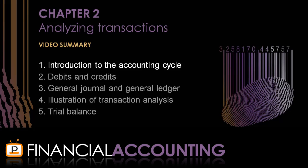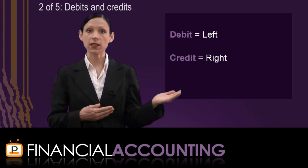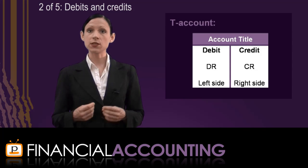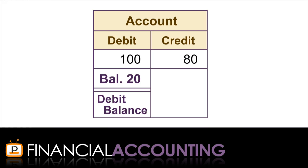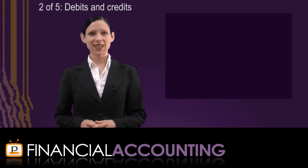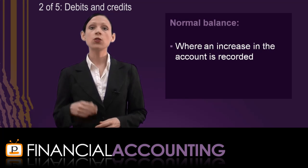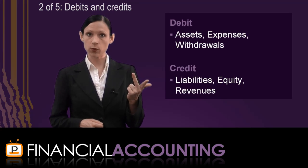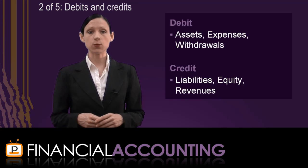Now that we've discussed the accounting cycle, let's talk about debits and credits. In accounting, debit means the left side of an account and credit means the right side of an account, which we can see using a T-account. For each account, we can calculate the account balance, which is the difference between the debits and the credits recorded in the account. So if we debit an account for $100 and credit it for $80, the difference is $20 more debits than credits, so the account has a debit balance of $20. Each account type has a normal balance, which is the side of the account to which increases are recorded. Assets, expenses, and withdrawals have normal debit balances, while liabilities, equity, and revenue accounts have normal credit balances. It is important to know if an account is increased by debits or credits, because you use this when journalising transactions.